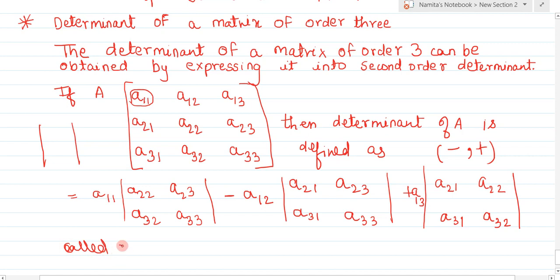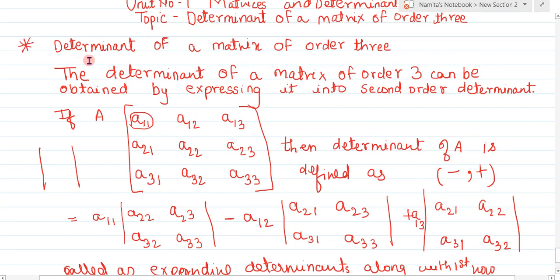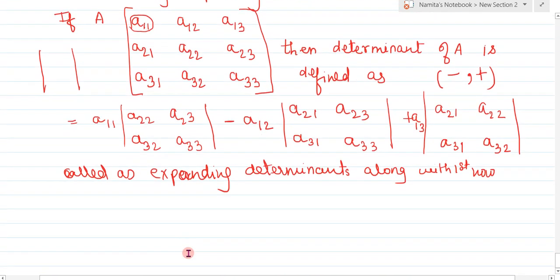This process is called expanding the determinant along the first row. Then we multiply: a₂₂ by a₃₃ minus a₂₃ by a₃₂, and so on to get the final determinant value. The first element is written outside, first row and first column are deleted, and remaining elements go inside. Now let's take one example so you will understand it easily.